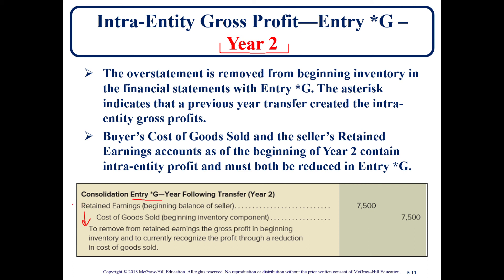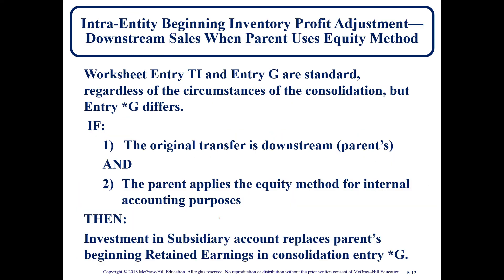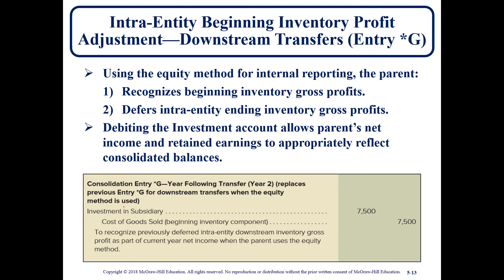In chapter 1 we didn't need to worry about whether the transaction was downstream or upstream. Downstream means from parent to subsidiary. However, for chapter 5 consolidated financial statements, if it is downstream, the parent uses the Investment in Subsidiary account instead of debiting Retained Earnings. The amount doesn't change — only the account used is different. And that's all for today.